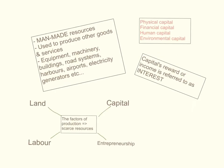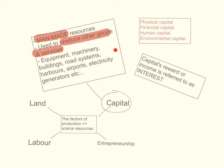Now let's take a look at capital. In the factors of production, capital refers to all man-made resources — the resources that are used to produce other goods and services. It refers to equipment, machinery, buildings, road systems, harbors, airports, electricity generators — any man-made good that is used to produce other goods and services.